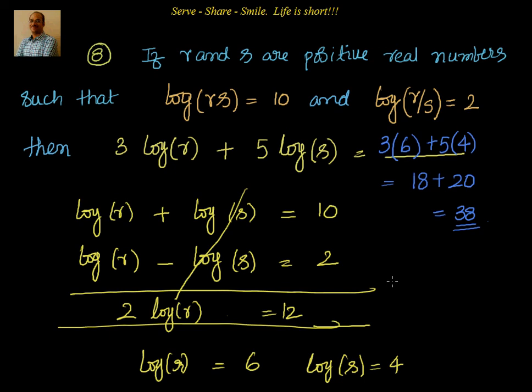So that we can simplify that. Actually, we can take this equal to p and q. Then you can say p plus q, p minus q. That's the equation reducible to linear equation in two variables. So we simplify that, we get the values of log r and log s. You substitute them, you get 38.